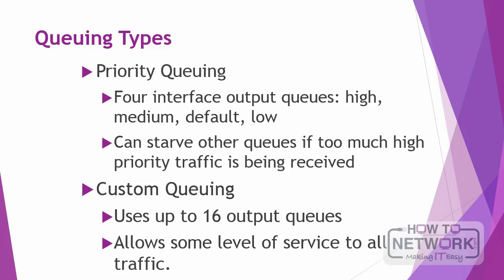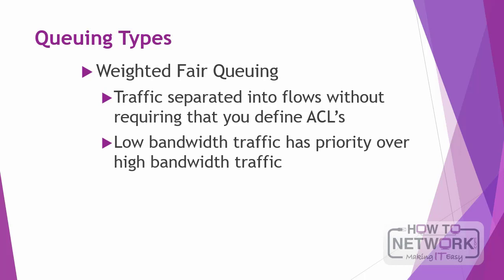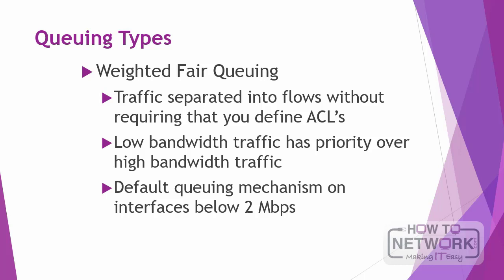Weighted fair queuing ensures that traffic is separated into individual flows or sessions without requiring you to define access lists. It uses two categories to group sessions: high and low bandwidth. Low bandwidth traffic has priority over high bandwidth traffic, and high bandwidth traffic shares the service according to assigned weight values. Weighted fair queuing is the default quality of service mechanism on interfaces below 2 megabits per second.